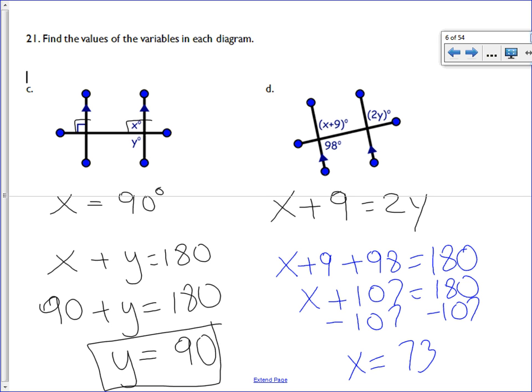73. So X is equal to 73. Now I can go back to that initial equation. Since I know what X is, I'm going to take out X and in its place I'm going to put 73.